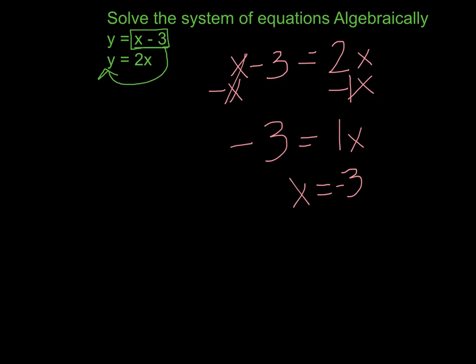So now that we know x is equal to negative 3, we're going to take that negative 3 and put it back into the original equation. So y equals 3 minus 3. The original equation was y equals x minus 3. So 3 minus 3 is 0.